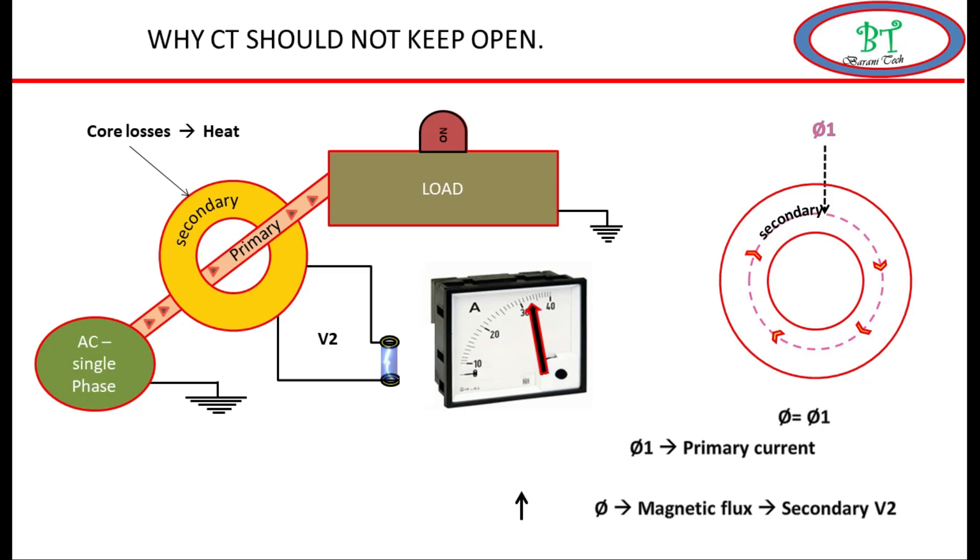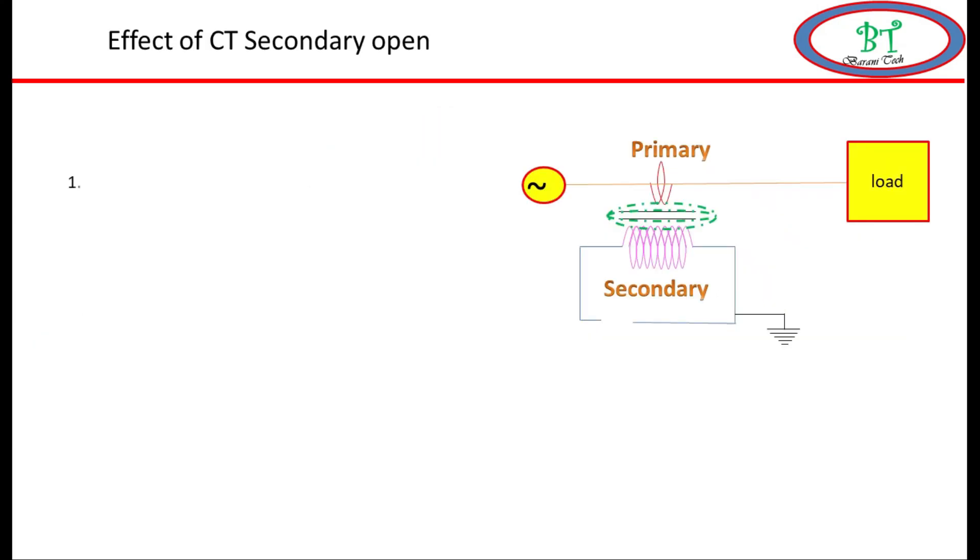Due to this high voltage, the secondary will face the following main problem: CT gets overheated. And also we have the following effects: More heat will be produced in CT due to core loss.